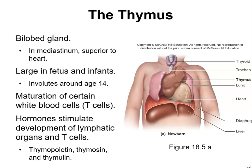The thymus is a bilobed gland in the mediastinum, superior to the heart. It is large in the fetus and infants and involutes around age 14. In the thymus, white blood cells — T-cells — mature, and hormones including thymopoietin, thymosin, and thymulin stimulate development of lymphatic organs and T-cells.